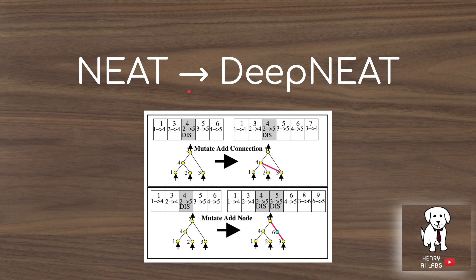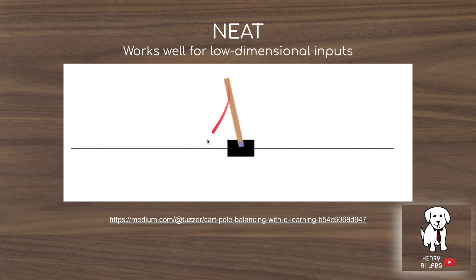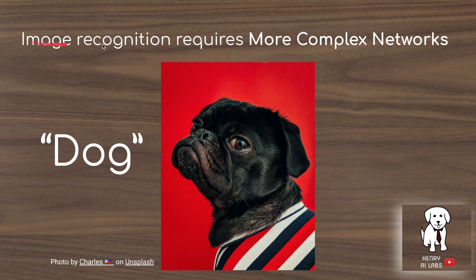NEAT is the original algorithm — NeuroEvolution of Augmenting Topologies. To extend NEAT to DeepNEAT, you take the idea of evolving individual neurons and extend it to evolving layers. The NEAT algorithm, focusing on evolving deep neural networks by their individual neurons, works really well for low-dimensional input tasks like cart pole balancing, where the input is the position of the cart and the angle and velocity of the pole. However, things like image recognition, audio recognition, and text classification require more complex networks to handle high-dimensional input, so the NEAT algorithm of evolving individual neurons just won't scale up to these problems.